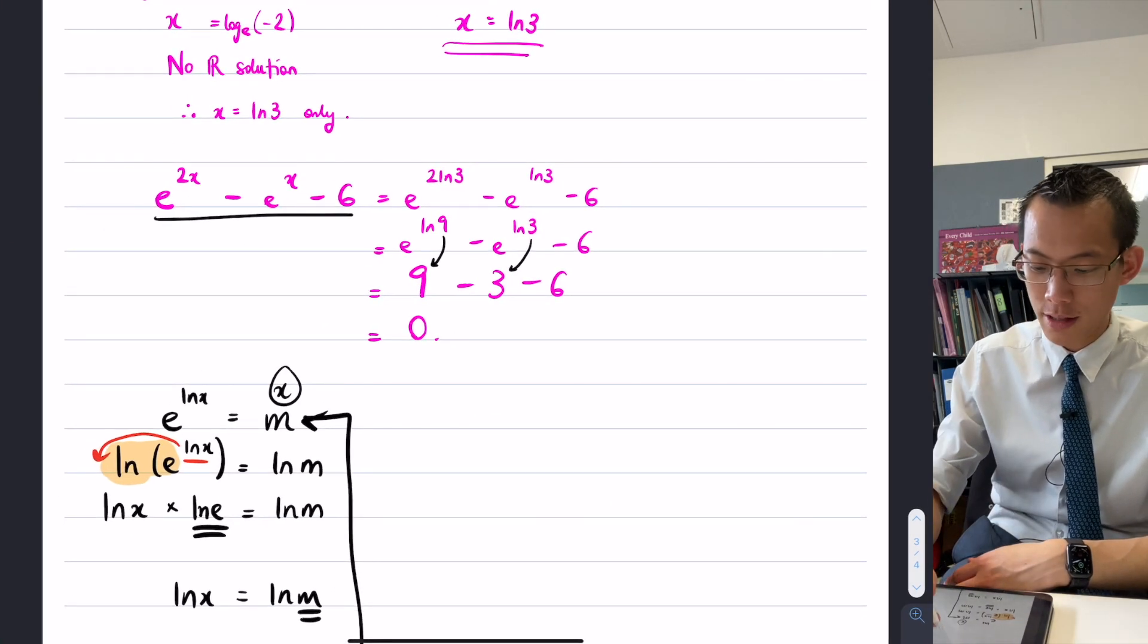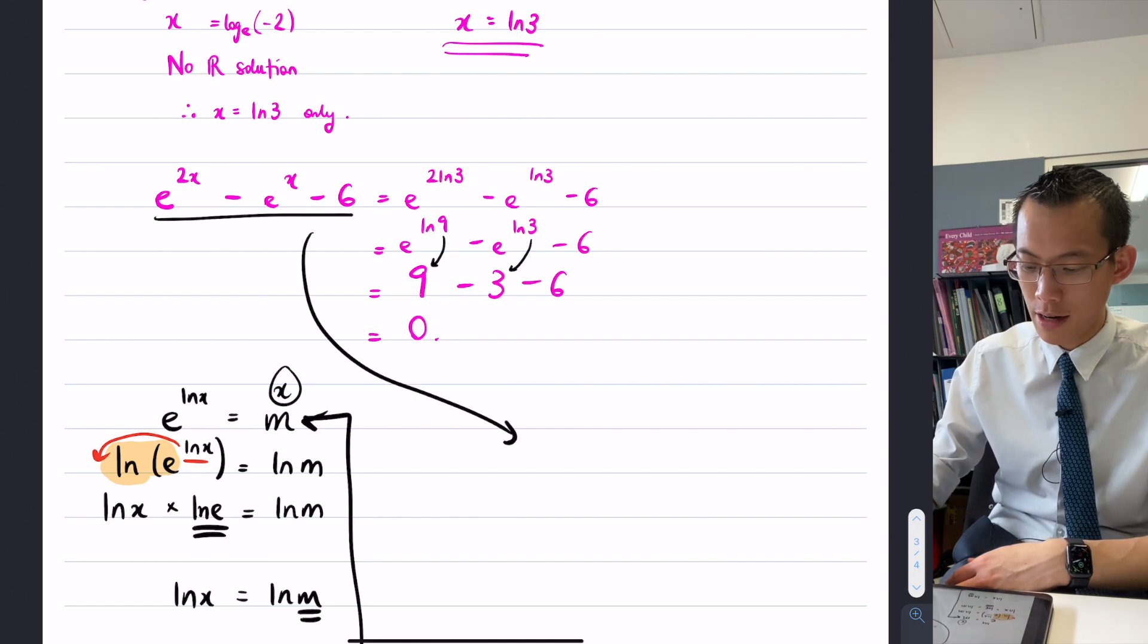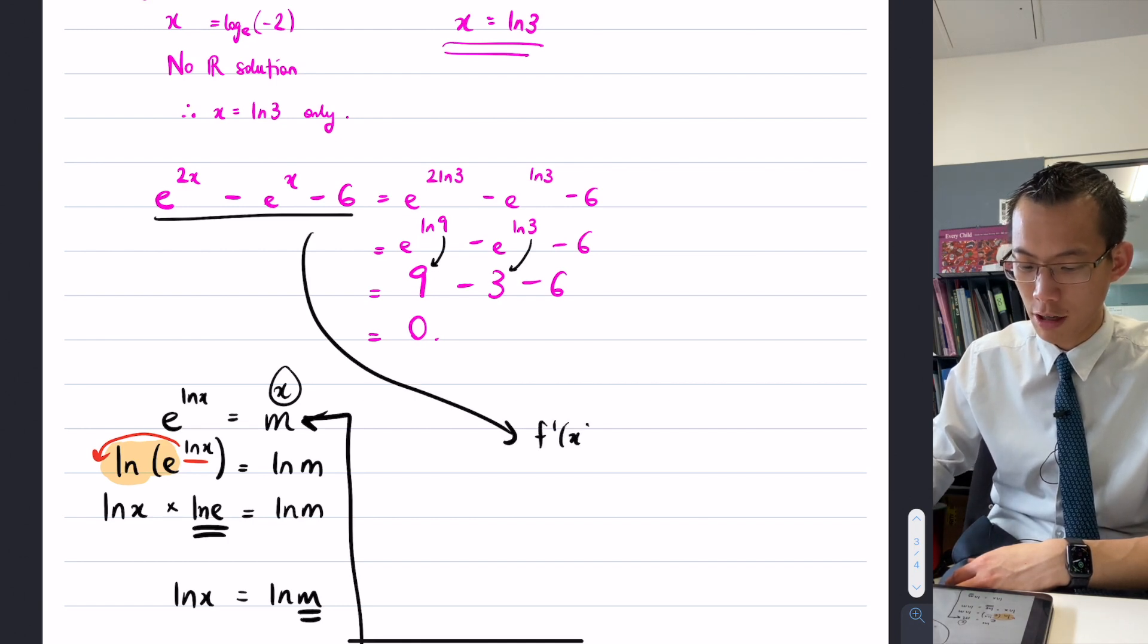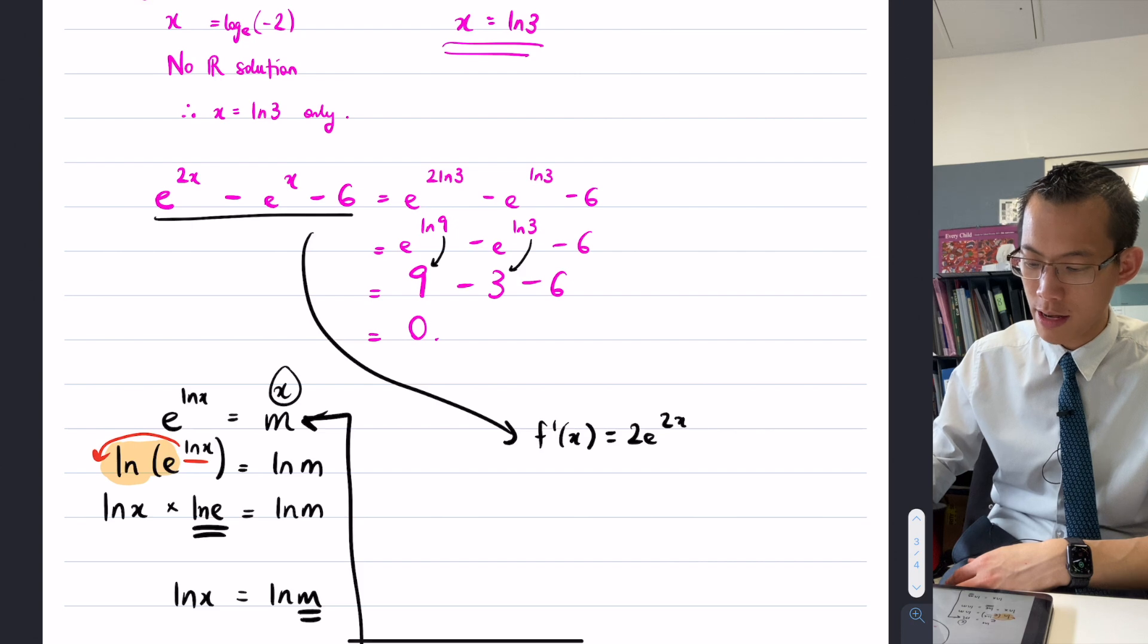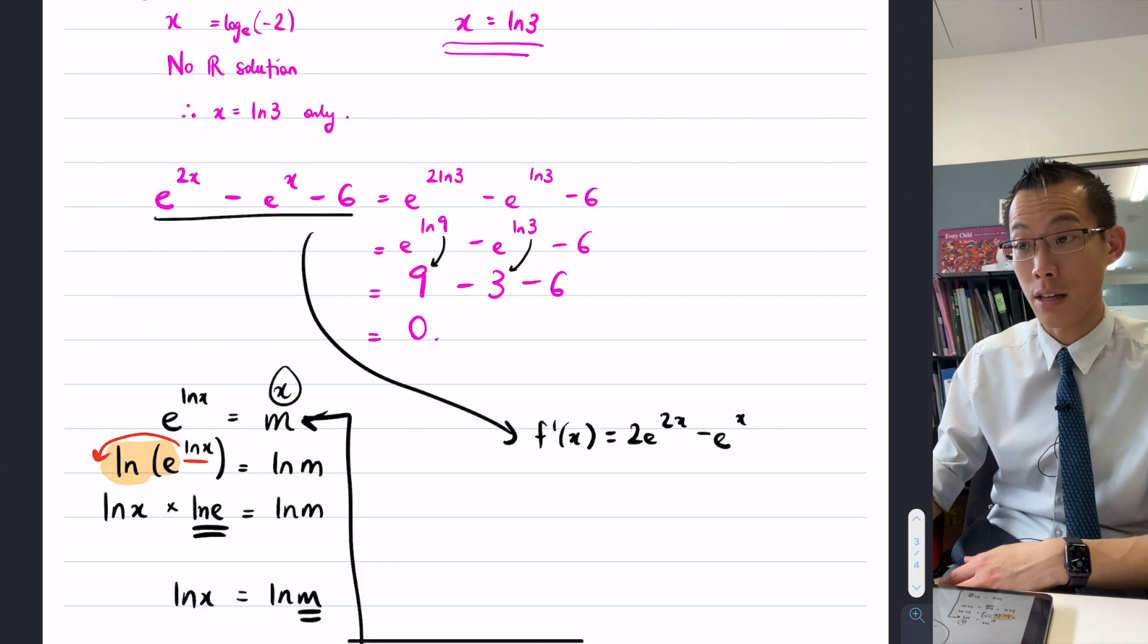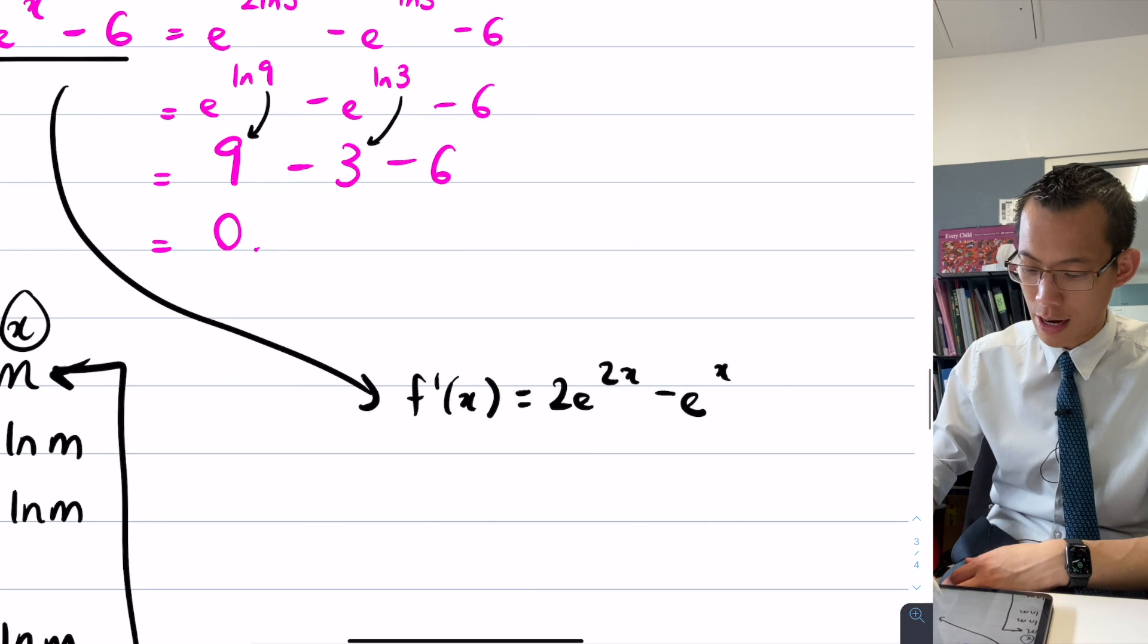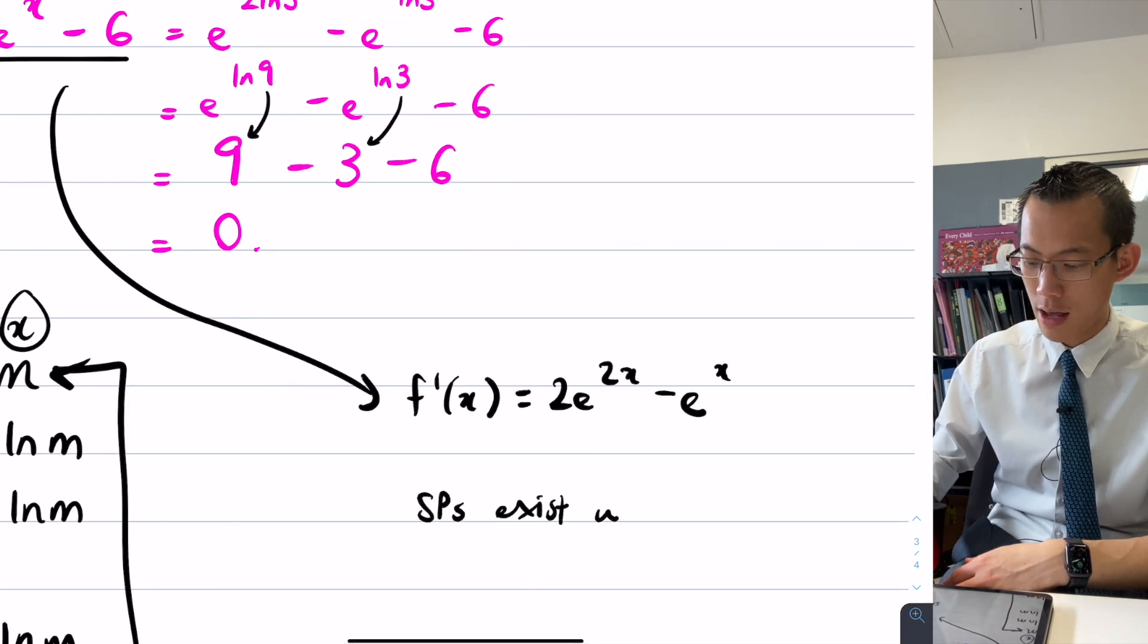I would say, well f'(x) is going to be, what's that? 2e^(2x) minus e^x, that's it. And then I'd have to solve this thing. I would say stationary points exist when that equals zero.